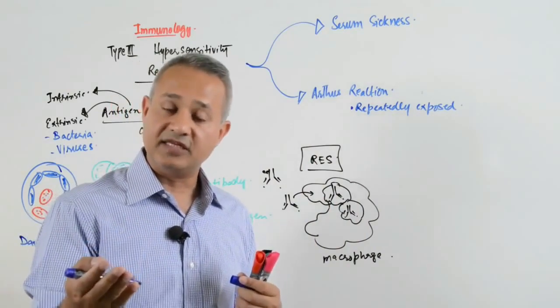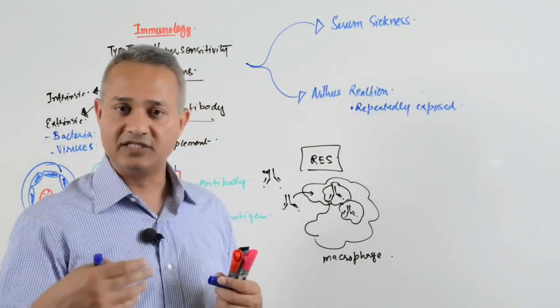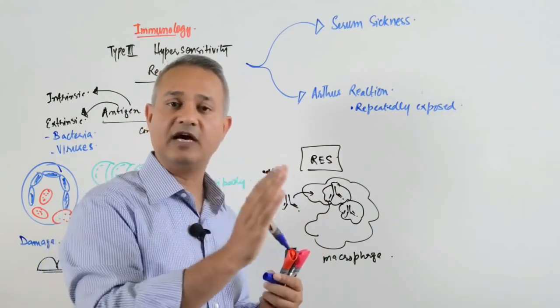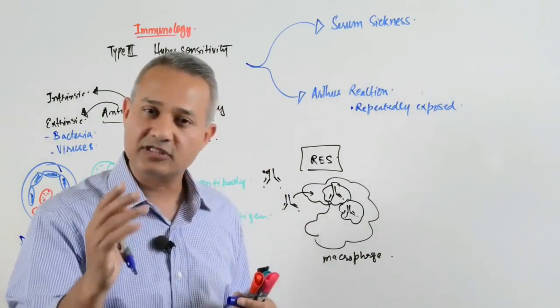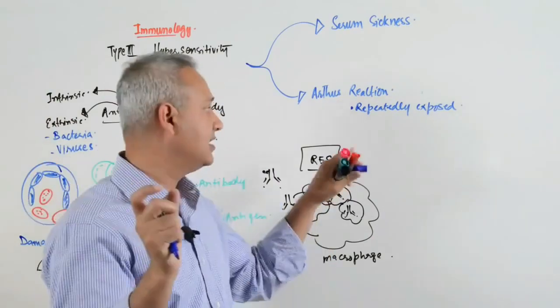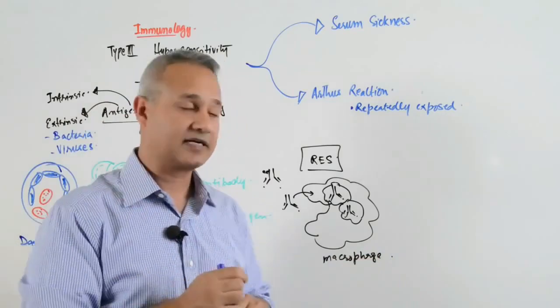There is an induced immune response as well. For example, with tetanus injection, the next booster dose should be given after five years. If the next dose is given before five years, we already have antibodies present and more antigens are injected.